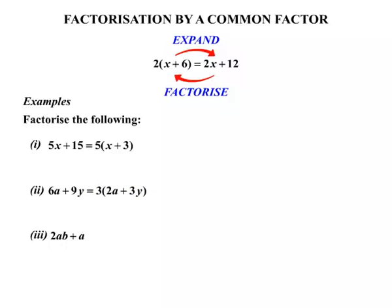Our third example here: 2ab plus a. Well, this time we look at the two terms. There's no common number, certainly, but there is a common letter. Notice the a appears twice in both terms there. So we take the a and then we have brackets.